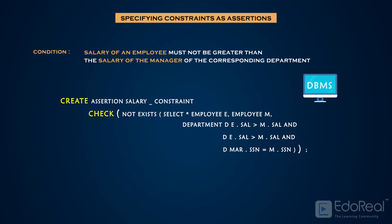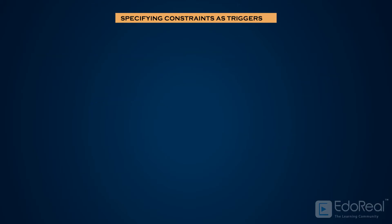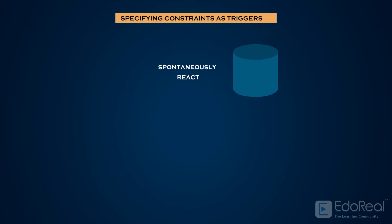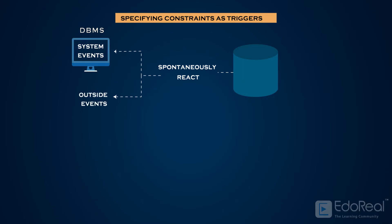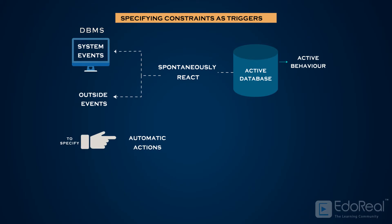The DBMS is responsible for ensuring that the condition is not violated. A database that can spontaneously react to events occurring inside the system, as well as outside the system, is called an active database. The ability to respond to external events via a trigger is called active behavior. To specify automatic actions that the database system should perform when certain events and conditions occur, a trigger is used.